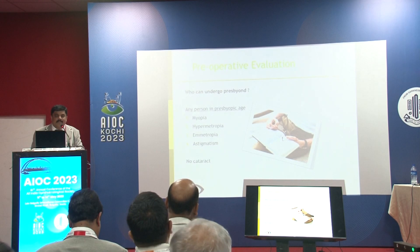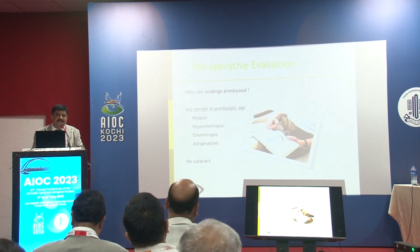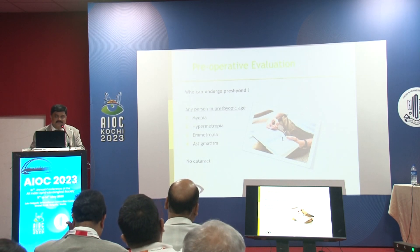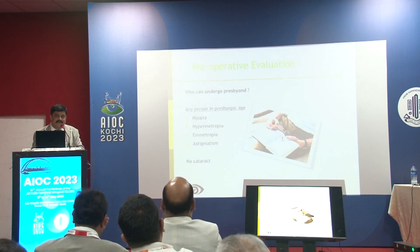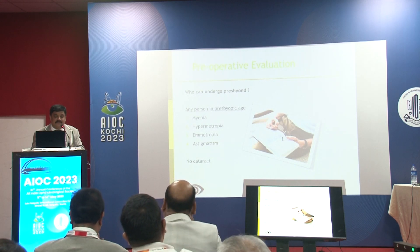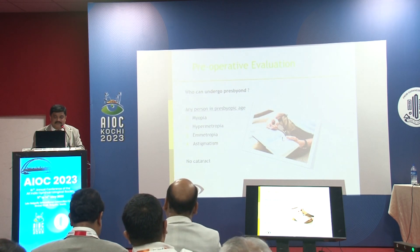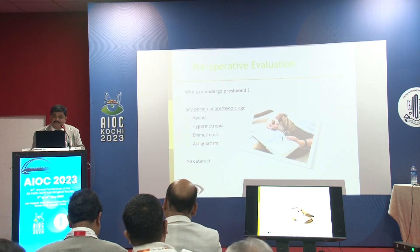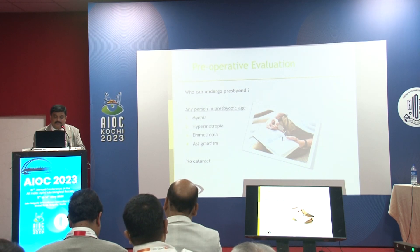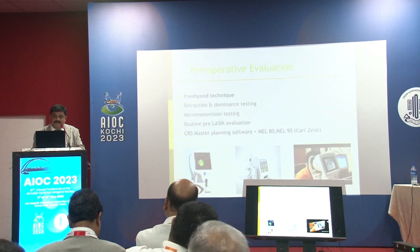For preoperative evaluation, PRESBYOND can be done for myopia with large amounts of power — I have done up to -8.5 diopters depending on pachymetry values — hypermetropia up to +5 diopters, more than 200 emmetropic patients, and astigmatism up to 4 diopters. Just make sure the patient does not have cataract.